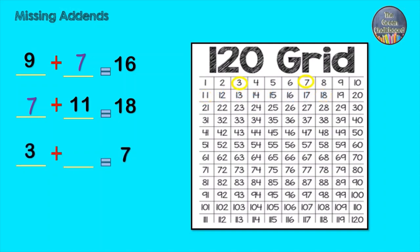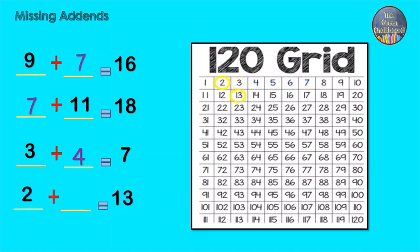3 to 7 is how many hops? 2 to 13 is how many hops? It is 11 hops.